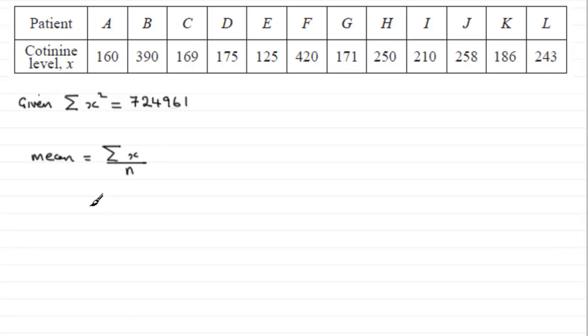So when you come to add these all up, you should find that you get 2757. 2757. And the number of values that we've got is 12.